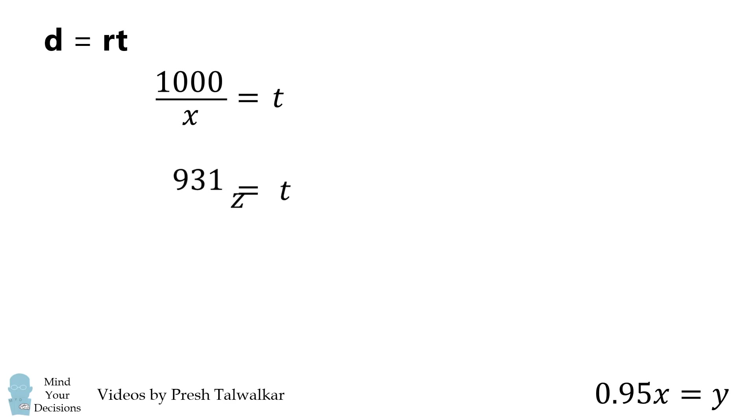We'll solve for t in each of these equations, set them equal to each other, and then solve for Z. We get Z = 0.931X.